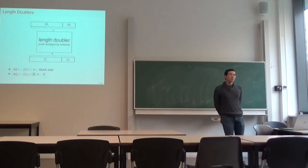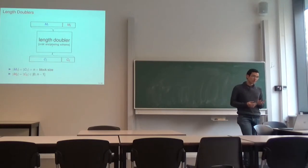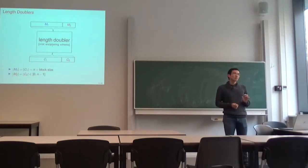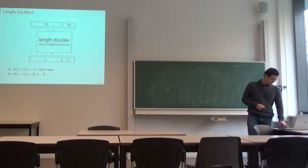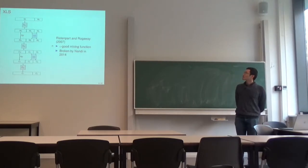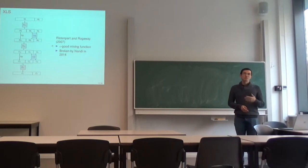That is the reason why we want to have length doublers: they can turn an n-bit encryption scheme into an encryption scheme that can encrypt every message with length between n and 2n-1. The first length doubler in the literature was XLS, proposed by Ristenpart and Rogaway in 2007. It uses three block cipher calls and two epsilon-good mixing functions. However, it was broken by Nandy in 2014.